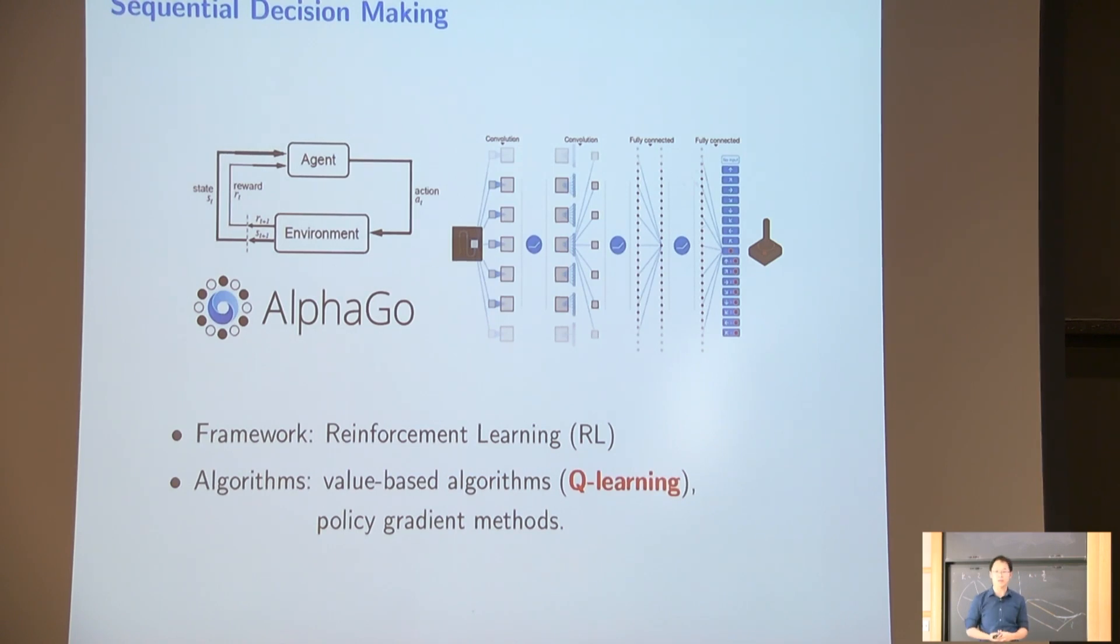So first, to motivate a reinforcement learning problem, I guess a lot of you have already faced a lot of sequential decision-making problem in practice. Essentially, it's not like a single decision-making problem. You just want to make a single decision. You actually make a decision, and the environment will give you some feedback. And then you adjust and make another decision, and the environment will give you another feedback.